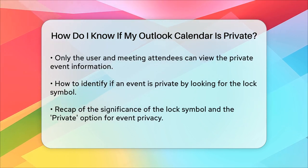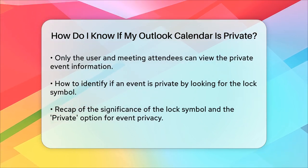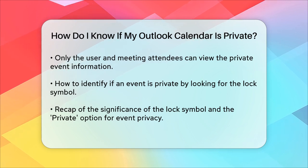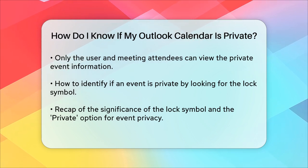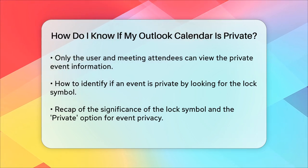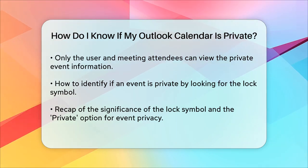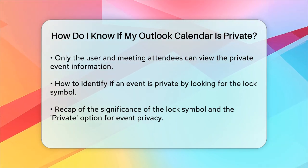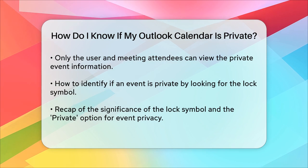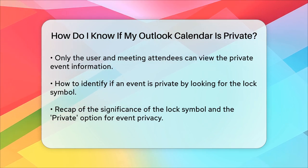If you're unsure whether an event is private, just look for that lock symbol in your calendar view. It's a clear indicator that the event has been marked as private. To recap, the lock symbol and the private option are your keys to knowing and controlling the privacy of your Outlook calendar events.